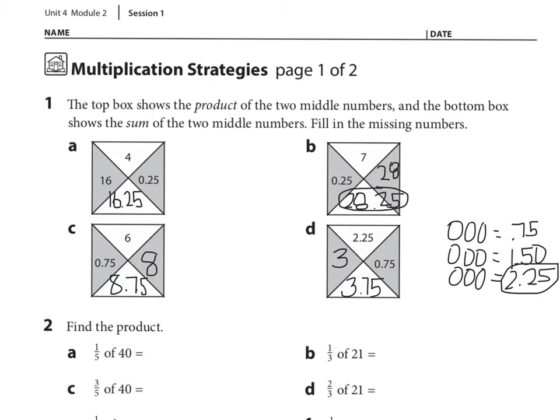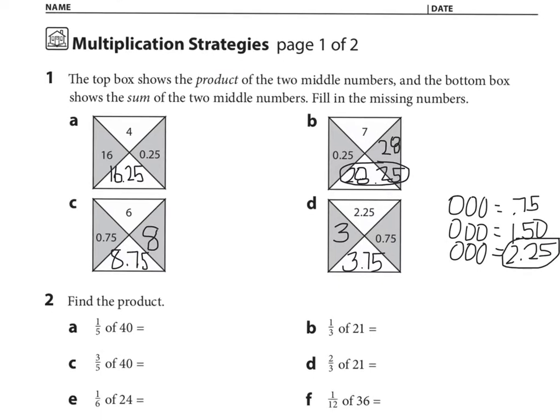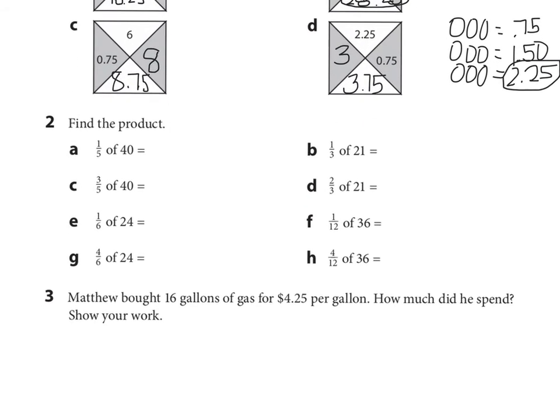Looking down now at number 2, 1 fifth of 40. So again, when I see that 1 fifth of 40 in my head, I'm thinking 40 divided by 5. 40 divided by 5 is what? That's right, 8. 8 is our answer. Looking at B, 1 third of 21. What am I thinking in my head? That's right, 21 divided by 3, which equals 7 is our answer.